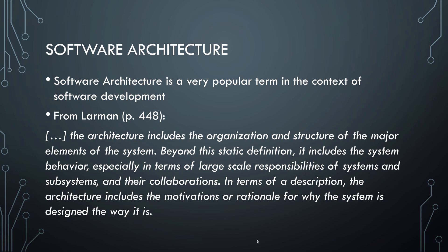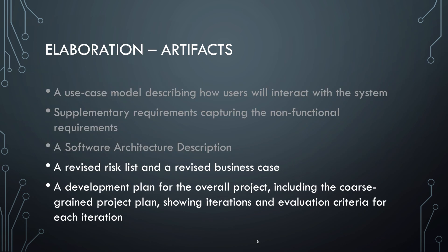For example, an assignment submission system may have a login design that requires students to use two-factor authentication — the reason for this is probably to avoid fraud. Another design decision could be that a submission can be associated with multiple students, because in the future we might want to add functionality that allows students to submit assignments in pairs. These are exactly the things that a software architecture document should describe. Since elaboration is a continuation of inception, it iterates on a few documents such as risk analysis and the business case, both of which may be impacted by what we learned in the elaboration phase.